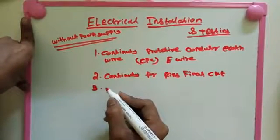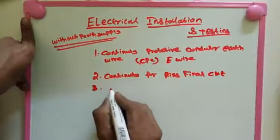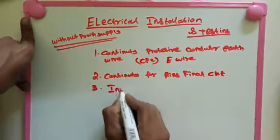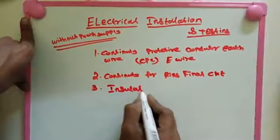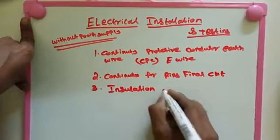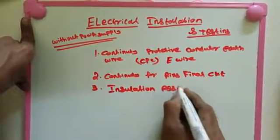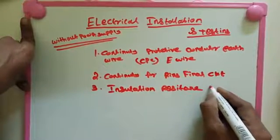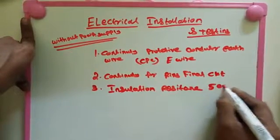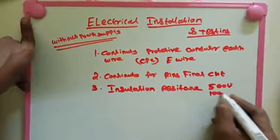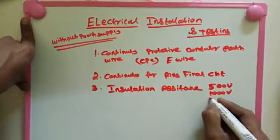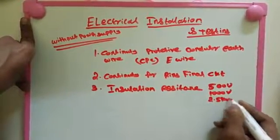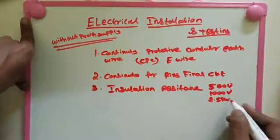Third one is insulation resistance test. Generally we do this test at 500 voltage, 1000 voltage, more than 2.5 kV, up to 2.5 kV we do this testing.